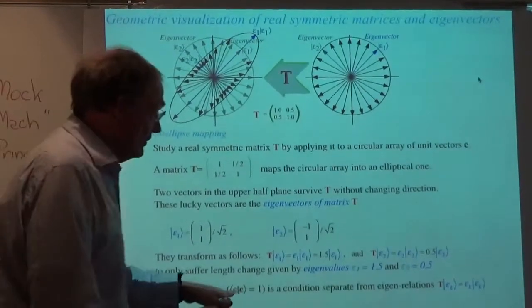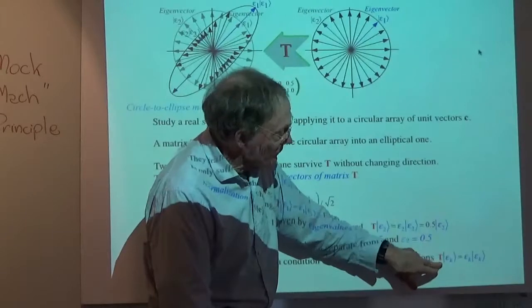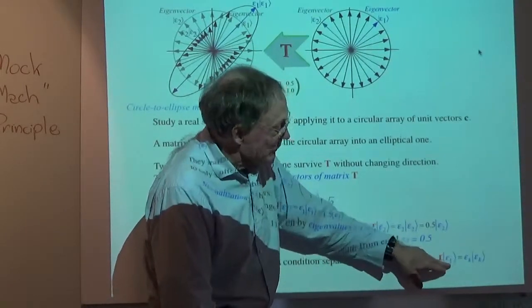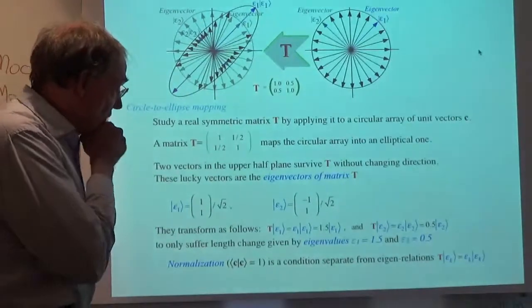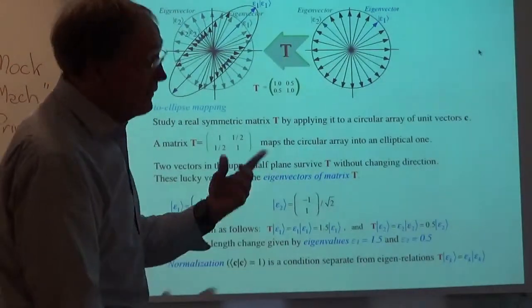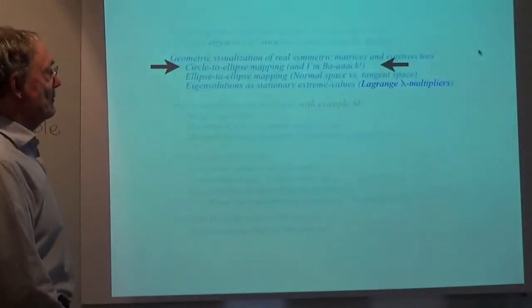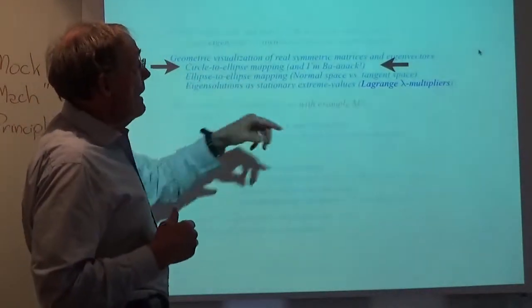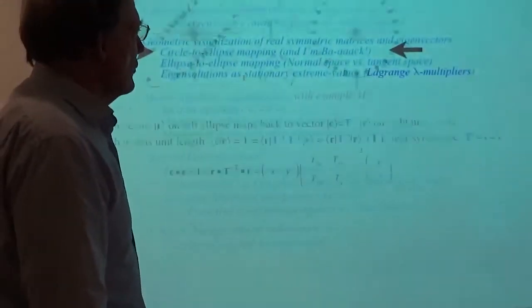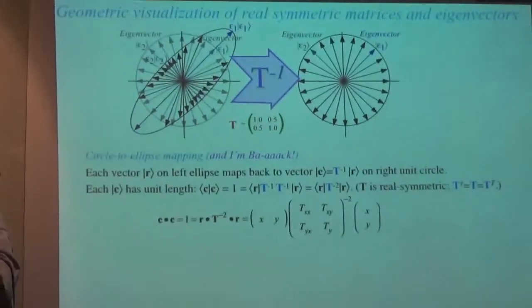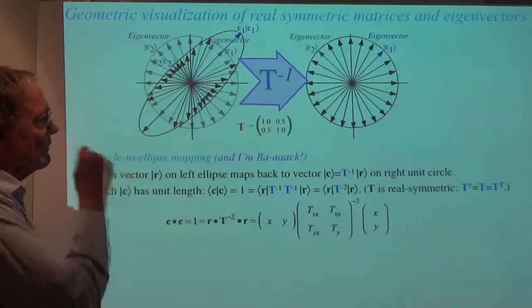Normalization is a condition to separate out all the possible eigenvalue relations, because this equation would be true even if the vector was a hundred units long. So we're in the unitary business here keeping that the same, because we have a probability definition that would look funny if I had a probability of two — or imaginary or something like that. Now, circle to ellipse mapping: do this thing and come back, make it balanced.